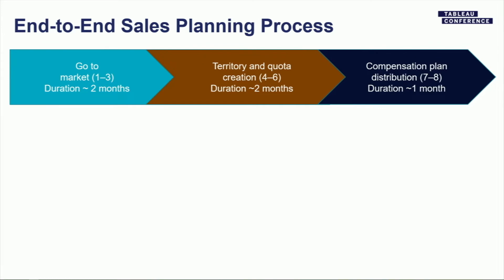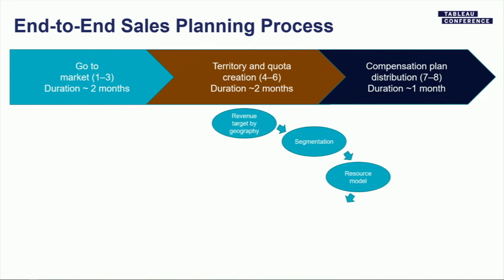Let's talk about the sales planning process. We see it in really three phases, and our planning process overall is about five months. The first two months is what I call the go-to-market phase. The top three things: first is revenue by geography — there's a sales leader responsible for the overall number, and I recommend going at least two levels deep, so Dan and his direct reports, or three levels deep into regions like Americas, APAC, and sub-bullets within those.